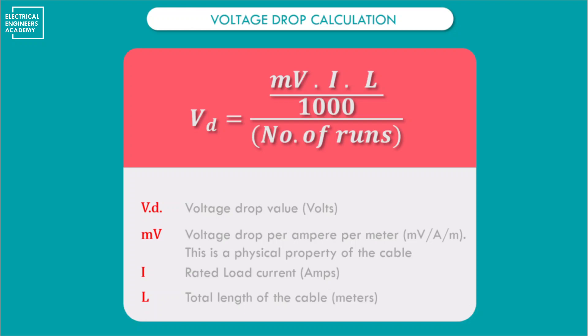As you recall, the voltage drop calculation formula consists of these factors, and finally we divide by the number of runs. So the number of runs is a very important deciding factor in the voltage drop calculation. You need to ensure that the correct number of runs is specified, otherwise many wrong decisions can be taken and it will have a drastic effect on the operation of your power distribution system.